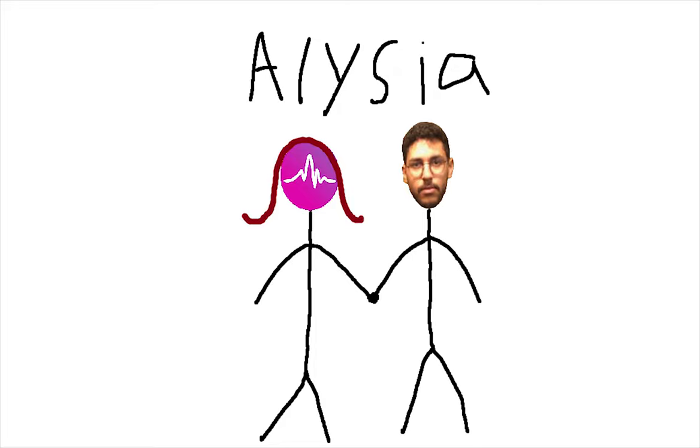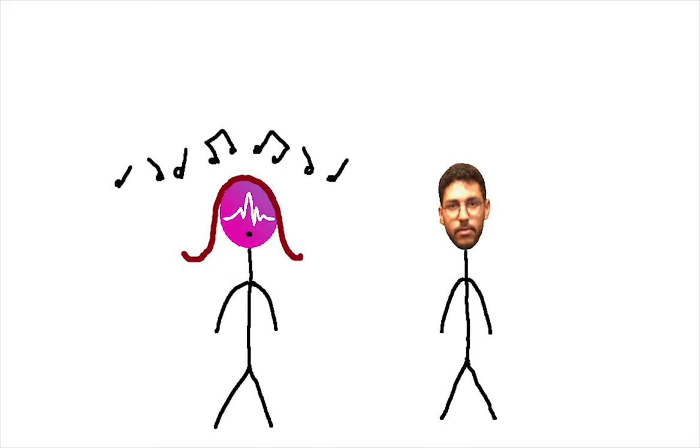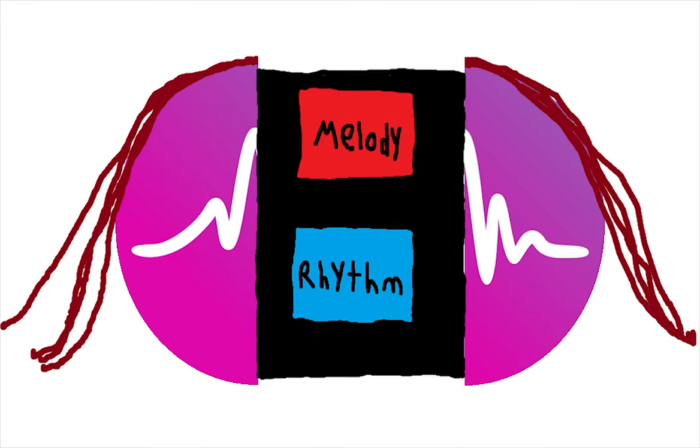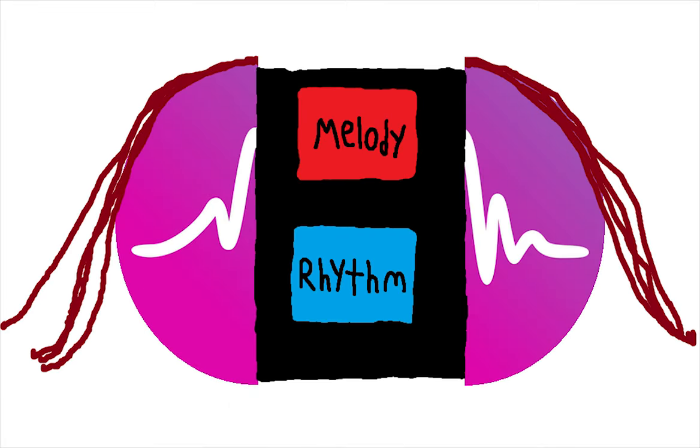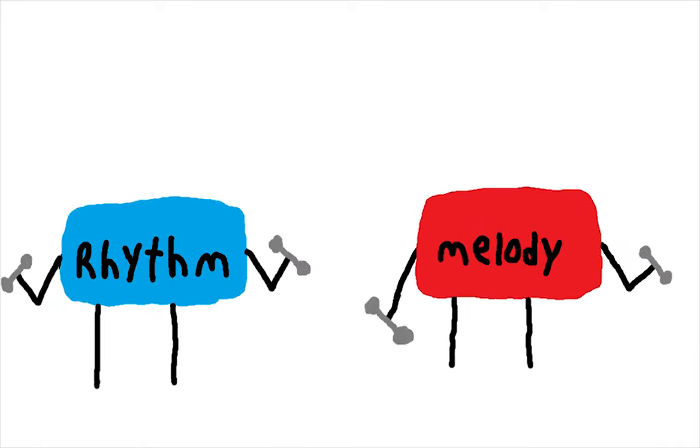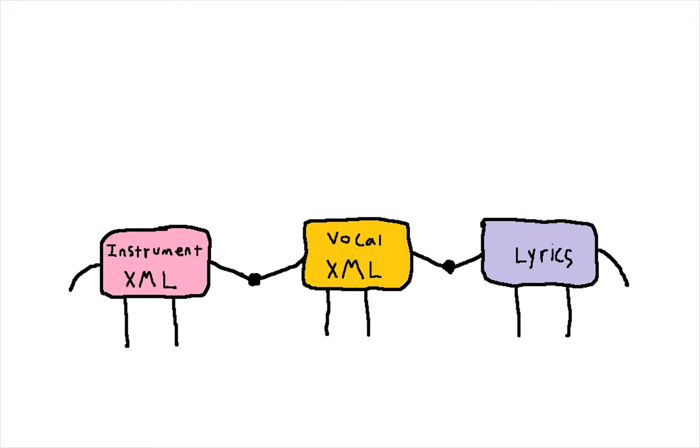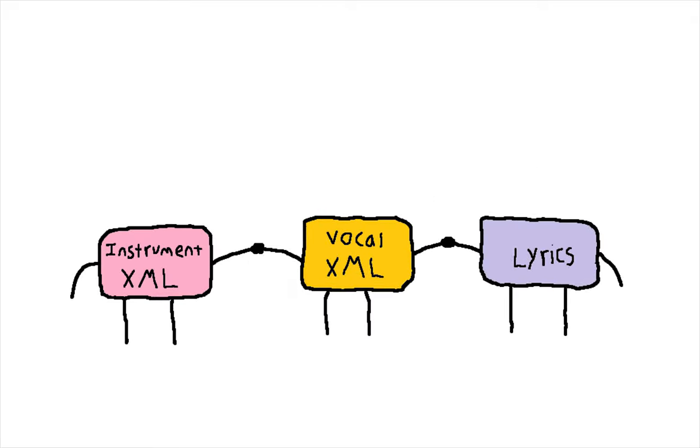Next, this is Alyssia. She is a music co-creation tool that takes lyrics inputs and generates melodies to go with them. Inside of Alyssia is two models, a rhythm model and a melody model, both of which are trained in the same way. The training is done with a large data set of music xml files, each of which relates a single instrument and vocal line to an accompanying lyric.